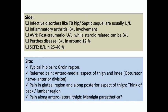Regarding laterality: infective disorders like TB hip and septic sequelae are invariably unilateral; inflammatory conditions could be bilateral; AVN if post-traumatic could be unilateral, but if steroid-related can be bilateral. All these features direct you towards a diagnosis. Regarding site — invariably it is an anteromedial groin pain that the hip produces. Be careful if it is gluteal pain; better check the spine and the back to be sure where the pain is coming from.